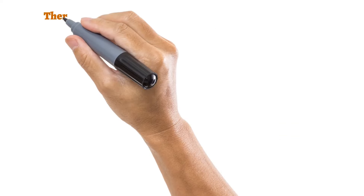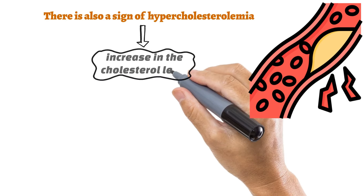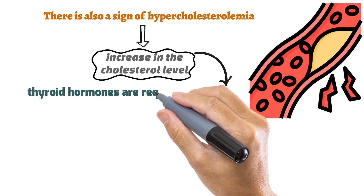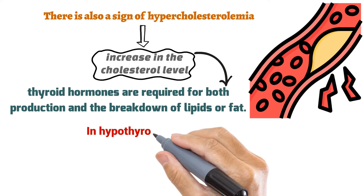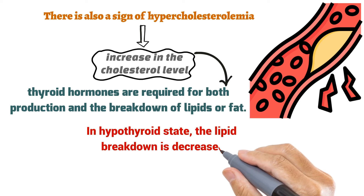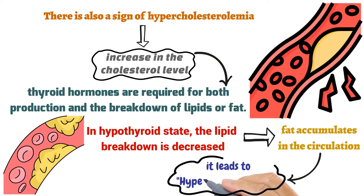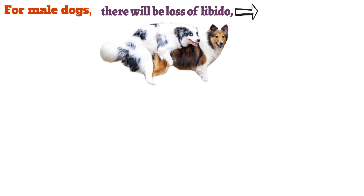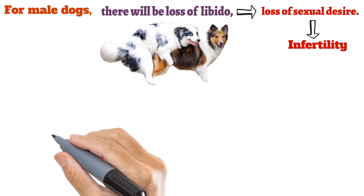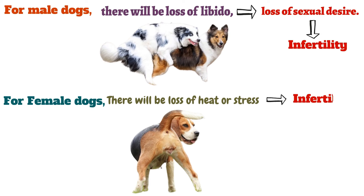Hypercholesterolemia — an increase in cholesterol level — is also seen, because thyroid hormones are required for both the production and breakdown of lipids. In a hypothyroid state, lipid breakdown is decreased, so fat accumulates in the circulation. In male dogs, there is loss of libido leading to infertility. In female dogs, there is loss of heat cycles, leading to infertility, and abortion may also be seen.